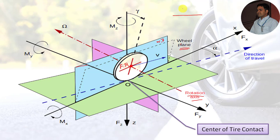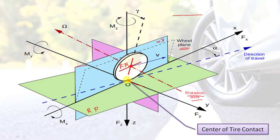The center of tire contact is the intersection of the wheel plane and the projection of the spin axis onto the road plane. The road plane is indicated by RP. So the center of tire contact is defined as the intersection of the wheel plane and the projection of the spin axis onto the road plane — this projection point becomes the center of tire contact.